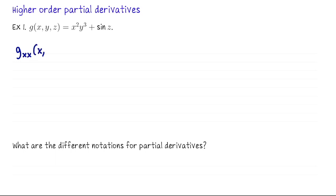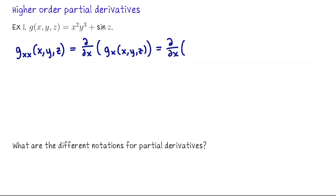What I might denote g sub xx means differentiate with respect to x and then do it again. In other words, it's like d/dx of g sub x. So that's d/dx of 2xy³ plus zero. That was the first derivative of g with respect to x. Now we differentiate this with respect to x again, and we're left with 2y³. So we just double-differentiated with respect to x.